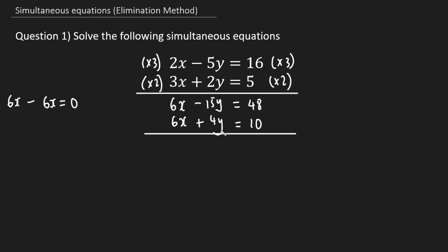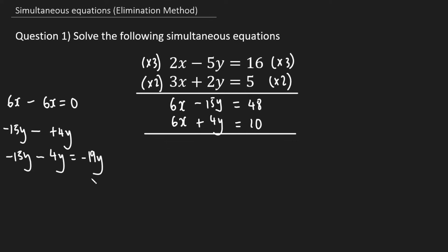So now I'm going to do the top y minus the bottom y: negative 15y minus positive 4y. A minus and a plus next to each other becomes a minus, so this becomes negative 15y minus 4y, which gives us negative 19y. 6x minus 6x is zero, and negative 15y minus positive 4y gives us negative 19y, which is equal to 48 minus 10 which is 38. That's step two done.